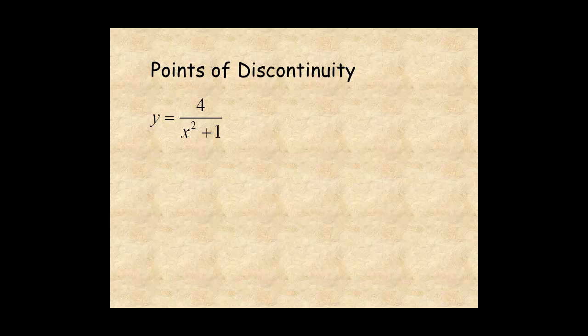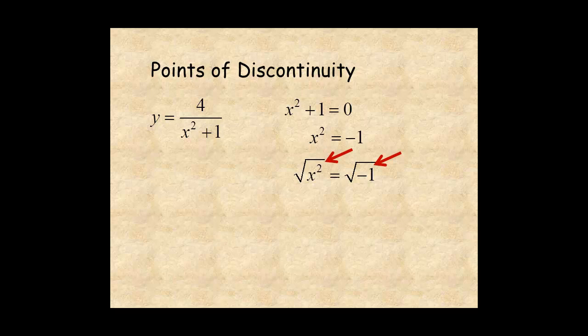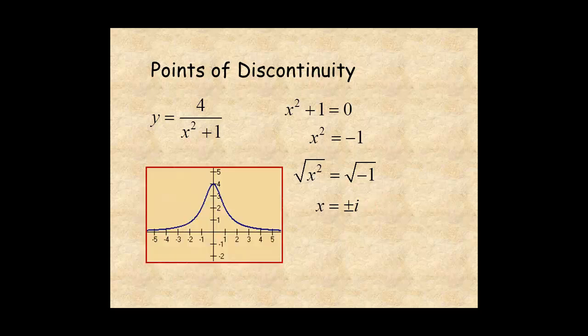For the function y equals 4 over x squared plus 1, when you set the denominator equal to 0, you have the equation x squared plus 1 equal to 0. Subtract 1 from both sides of the equation, find the square root of both sides, and you can see the solutions are imaginary. So the function doesn't have any points of discontinuity. Here is the graph of the function — you can see it is defined everywhere along the x-axis.